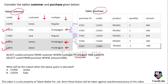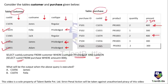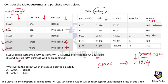There is also an inner query: select customer ID from purchase where amount is greater than 300. In the purchase table, two records have amount greater than 300. Selecting customer IDs from those two records gives C1076 and C1074. This is the result of the inner query.